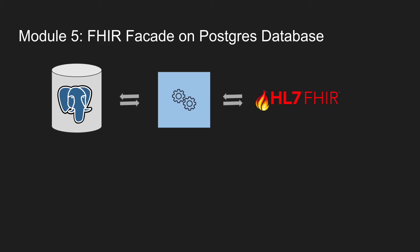And finally, in module five — which is optional — we will work on the FHIR facade on Postgres, where we learn in depth how EHRs like Epic or Cerner built their FHIR APIs to begin with. We will look at different techniques to achieve a FHIR-compliant API and build a FHIR server from scratch using popular open source frameworks.